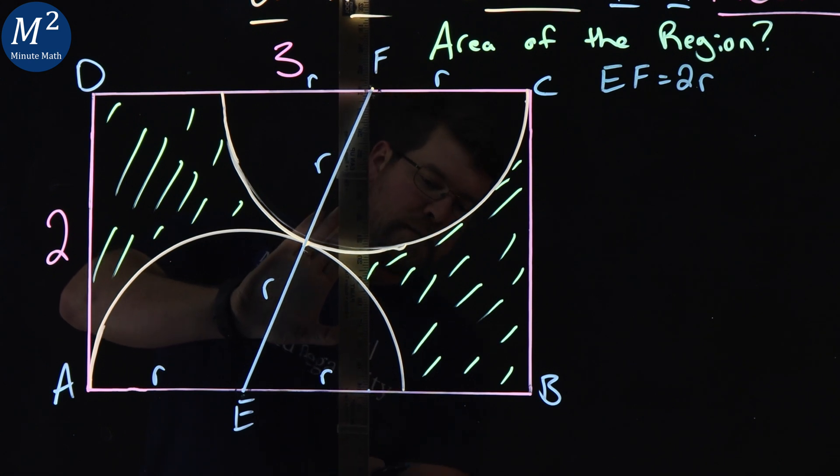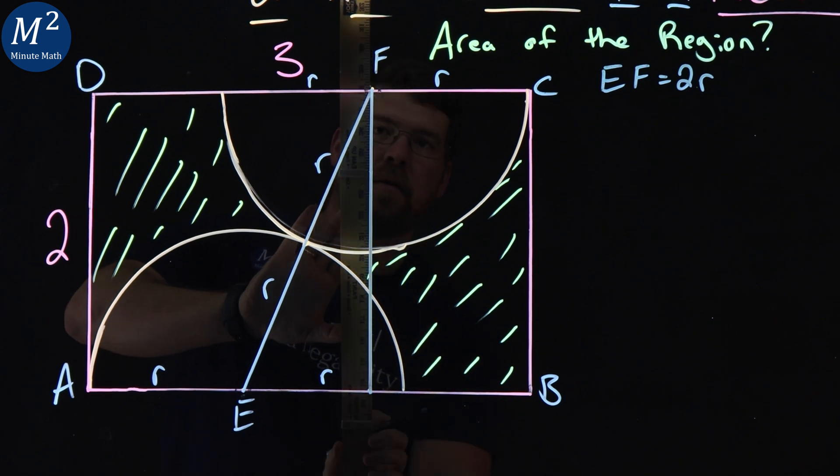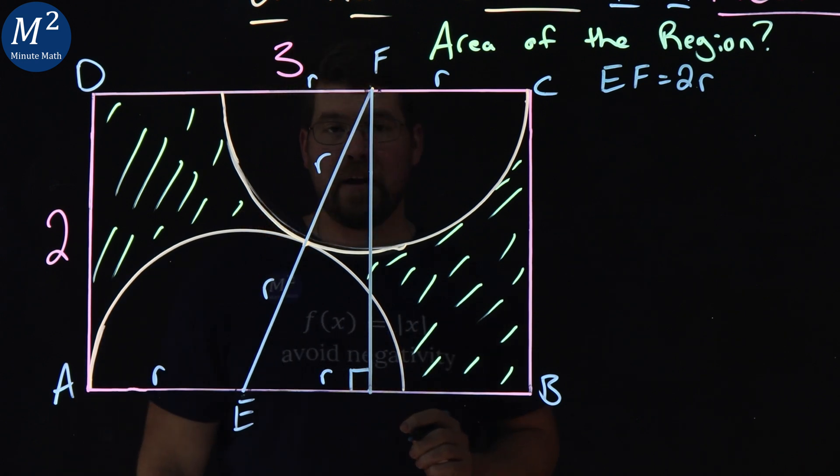Right angle down, drop a line straight down from F. Right here.